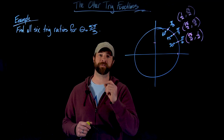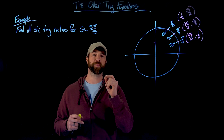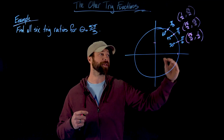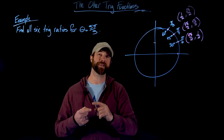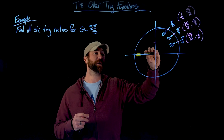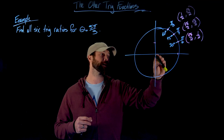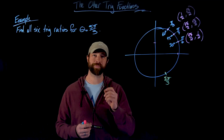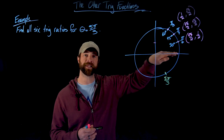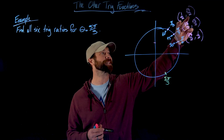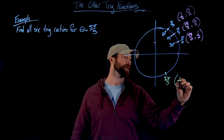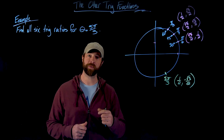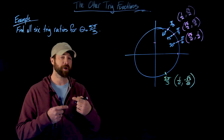Now I look for where 5π/3 is. I relate it to 2π — 2π would be 6π/3, so 5π/3 is one π/3 step short of a full rotation, placing it in the fourth quadrant. It is π/3 from the horizontal axis, so it has the same x value as the π/3 point, but since we're in the fourth quadrant, it will have a negative y value. Once we've identified the point associated with our angle, we've done most of the work.